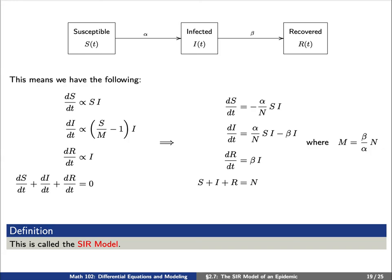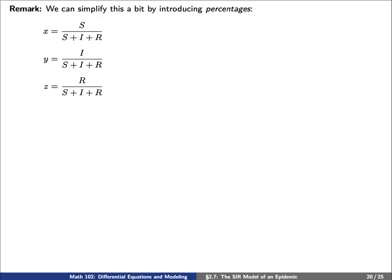We can simplify things a bit by introducing instead percentages. Let's let x denote the percentage of those that are susceptible, y as the percentage of those that are infected, and z as the percentage of those who've recovered from the disease. This means we can write dx/dt as negative alpha times x times y, dy/dt as alpha times x times y minus beta times y, and dz/dt as beta times y. We're going to denote R_0 as N over capital M. Remember that N was our total population size, and M was our threshold, which is just equal to alpha divided by beta.